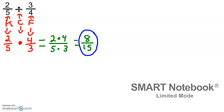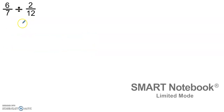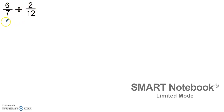Now that we have it in our notebooks, let's look at a little bit more difficulty with proper fractions divided by a proper fraction. So here we have six sevenths divided by two twelfths. Again, step one says change all mixed numbers and whole numbers into improper fractions. Since we have none here, step one is already done for us.